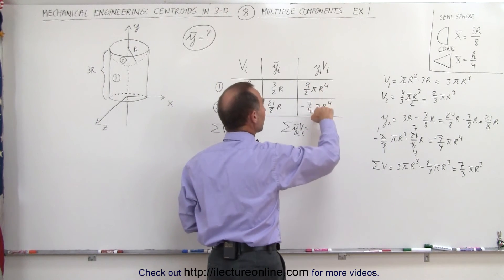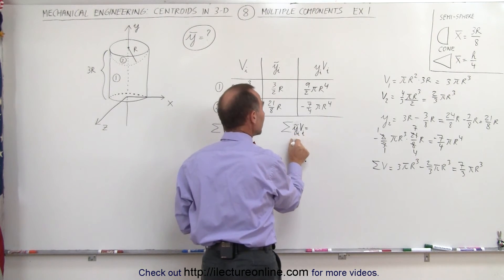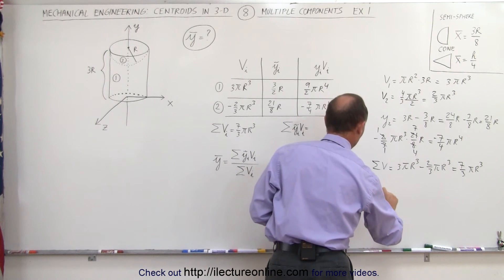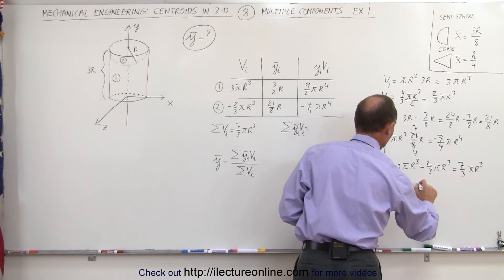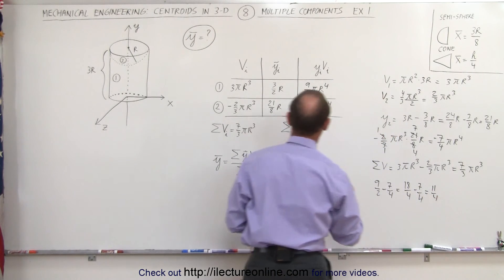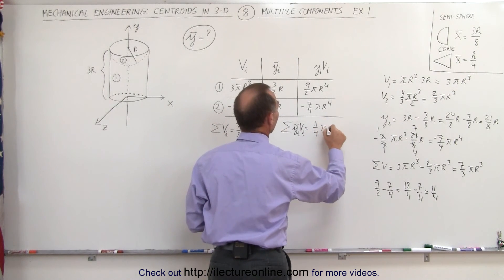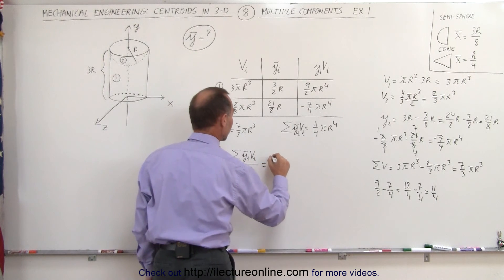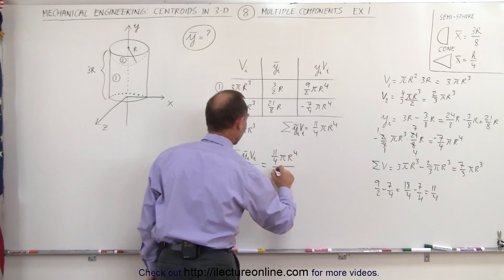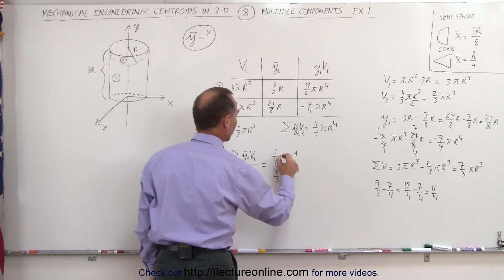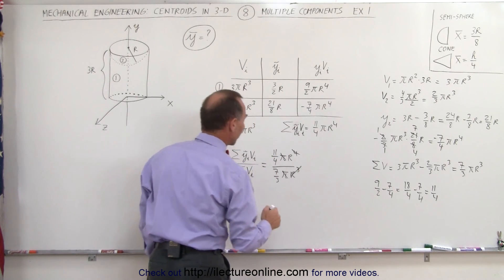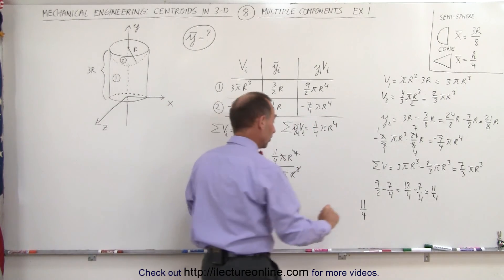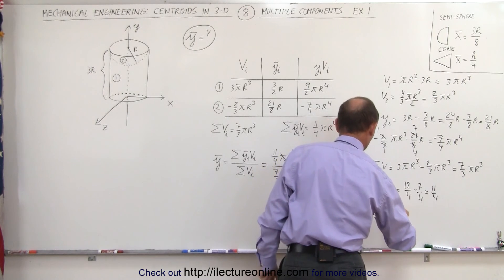Now we need to sum up the products of the y-coordinate of the centroid of each individual piece multiplied by its volume, and add those together. We have nine-halves minus seven-fourths. Nine-halves minus seven-fourths equals 18-fourths minus seven-fourths, which is eleven-fourths. So when we add these together, we get eleven over four pi r to the fourth. Finally, we divide this by the net volume: eleven over four pi r to the fourth divided by seven-thirds pi r cubed. The pi's cancel, three of the r's cancel, giving us eleven-fourths divided by seven-thirds.